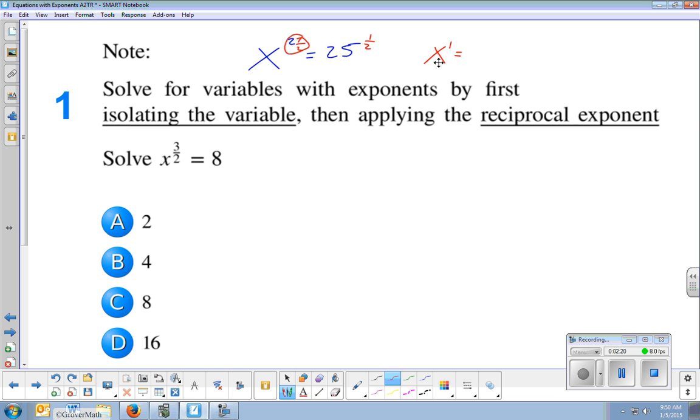And we know x to the first is really just x. So by multiplying an exponent by its reciprocal, you end up getting – I just want to fix that right over here. So 2 times 1 half is 1. So when you multiply a number by its reciprocal, it multiplies to 1.